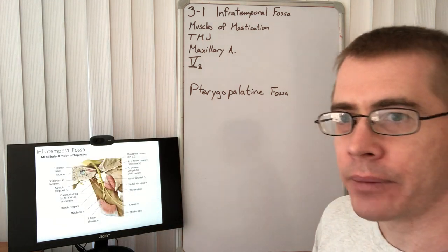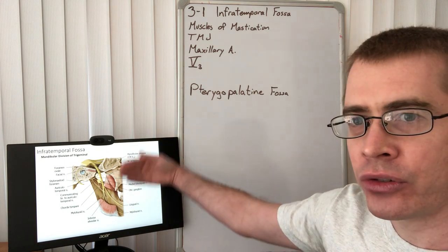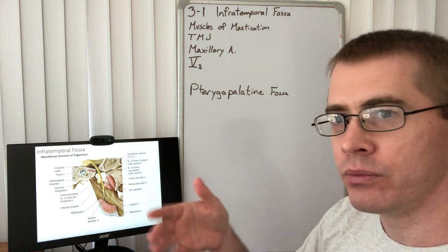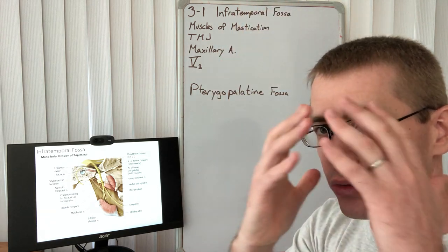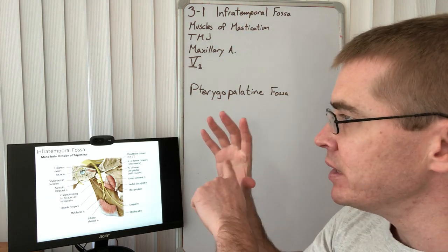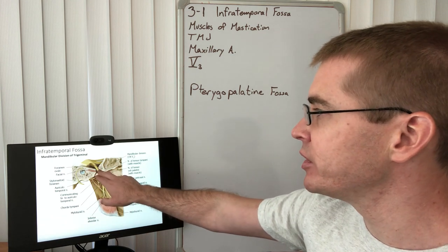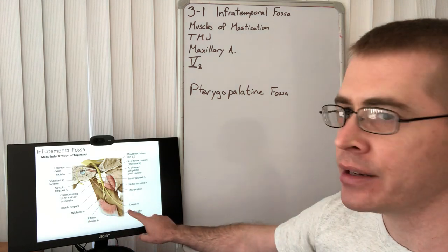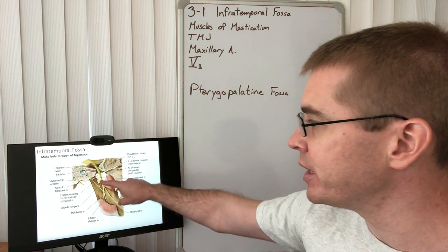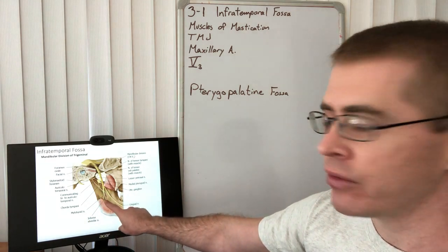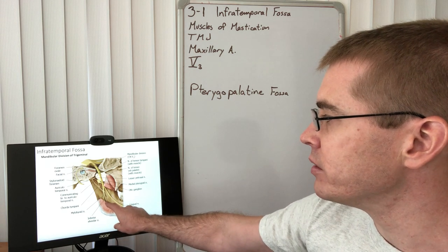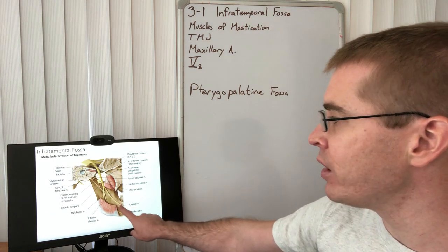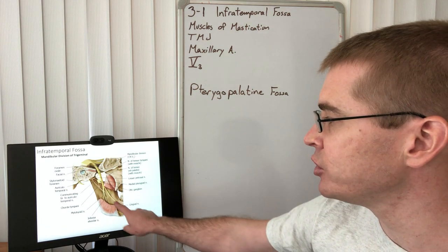Okay we'll move on. So here is an internal view of the infratemporal fossa. We've bisected the skull and we're looking at it from the inside. We can see the infratemporal fossa here. We see the foramen ovale with V3 traveling through it. We see the inside of the ramus of the mandible and here you can see that inferior alveolar nerve entering the mandible. We can see lingual nerve traveling along the edge of the mandible just below the teeth.